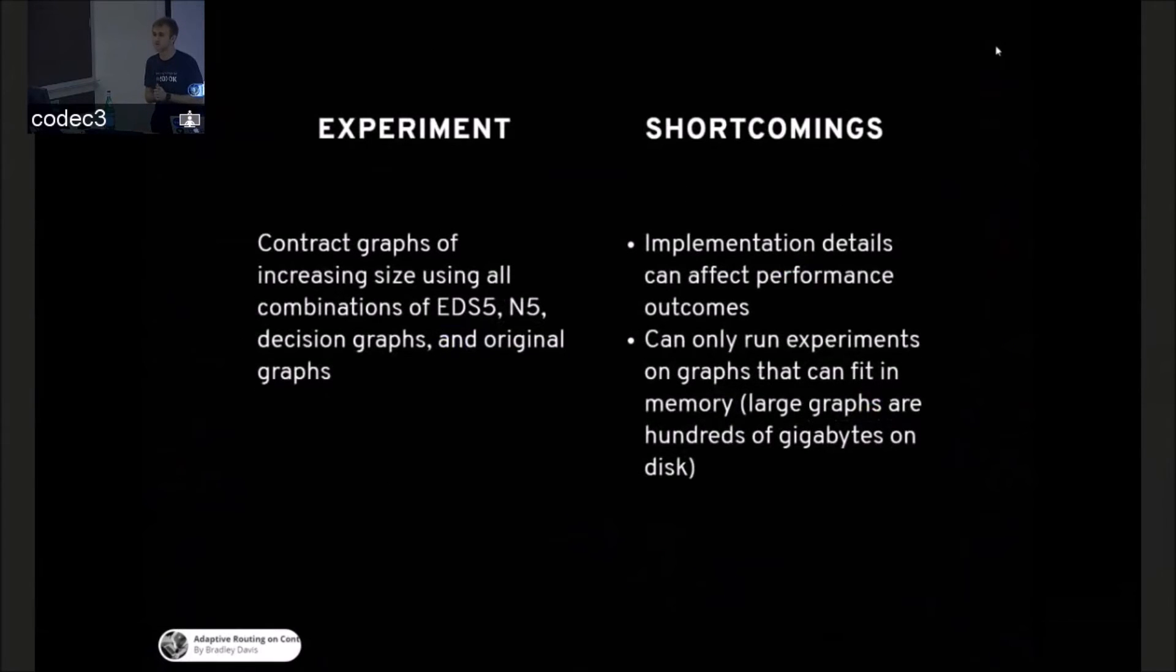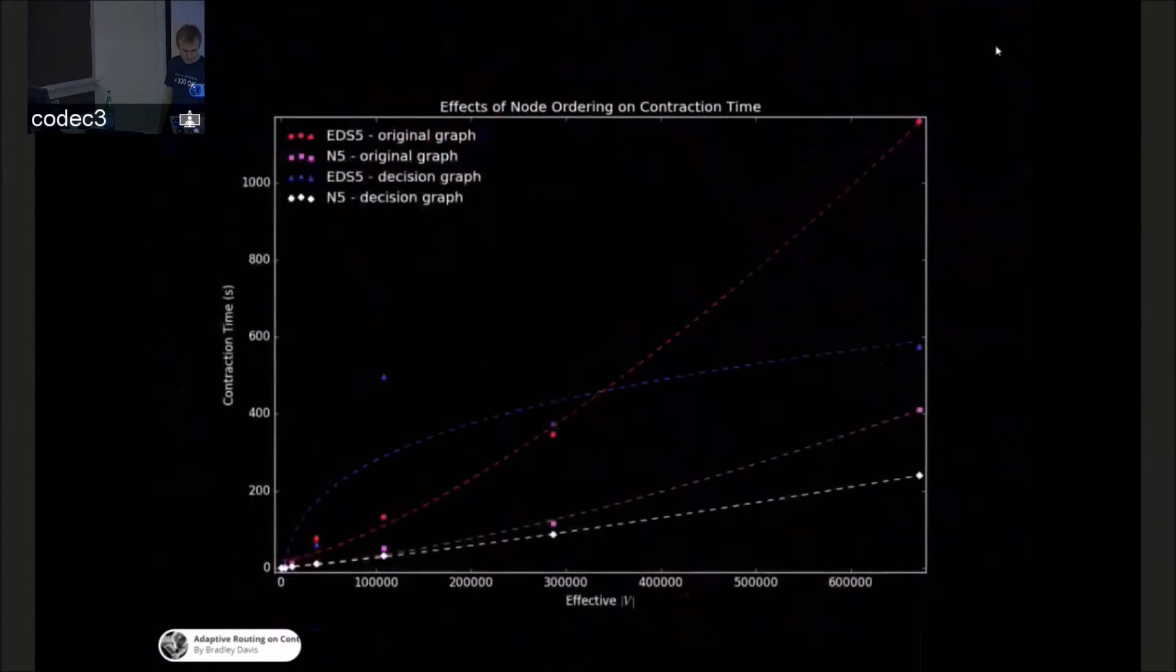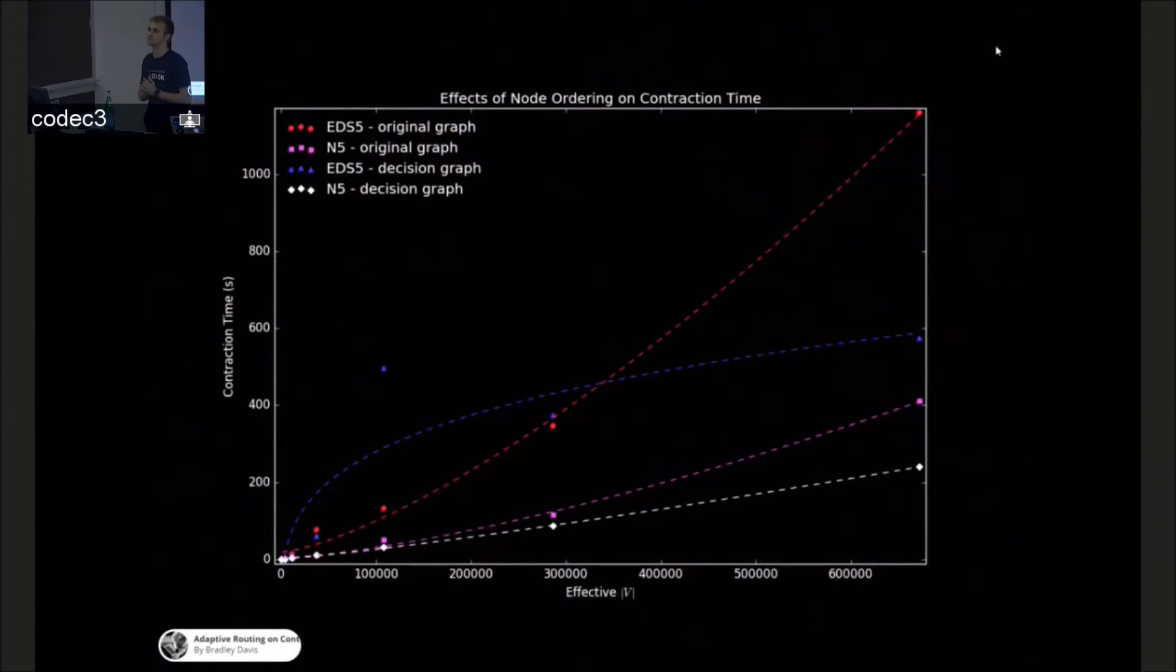So I wanted to run some experiments on larger graphs and see how it performed. It's important to note that the actual times for routing, while the trend is accurate, the implementation details can affect the actual number at the end. So this is a graph of the effects of node ordering on contraction time. And you'll notice that the red line represents what was described in the paper, EDS-5 with a full graph with all the curves. And it takes quite a while to contract a graph about the size of the San Francisco Bay Area. But using N5, the purple and the white lines, the contraction is much faster. In fact, in later simulations, contracting all of the city of San Francisco took about 11 seconds on commodity hardware. And this is a huge improvement and very necessary.